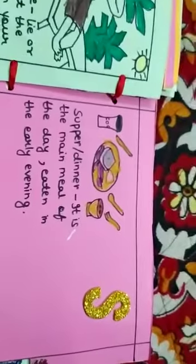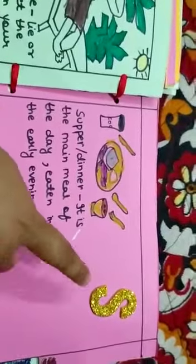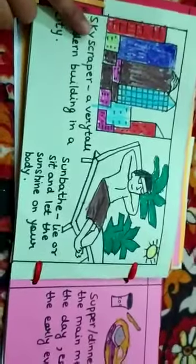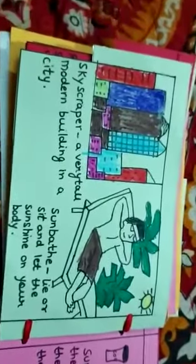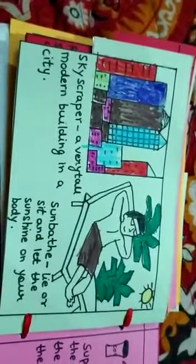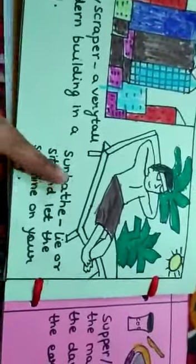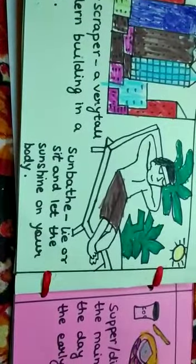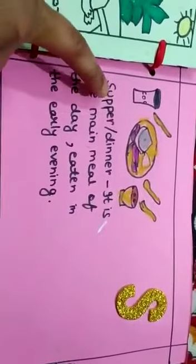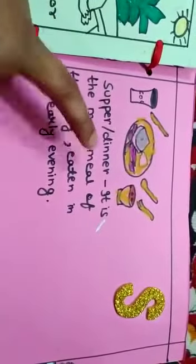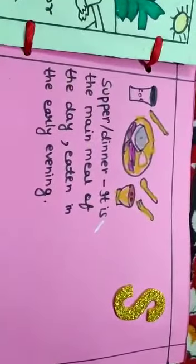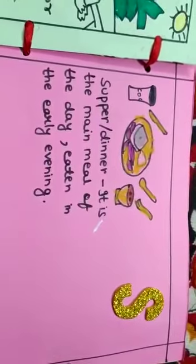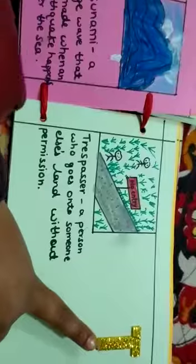The next alphabet is S. The first word is skyscraper, that is a very tall modern building in a city. The second is sunbathe, that is to lie or sit and let the sun shine on your body. And the third is supper or dinner. It is the main meal of the day eaten in the early evening.